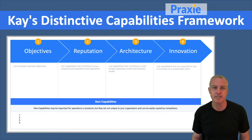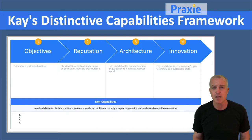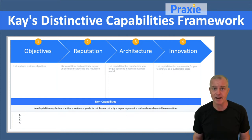The idea here is that you want to understand your strategic objectives as a business. And once you understand that, then you look at three areas to really get focus.